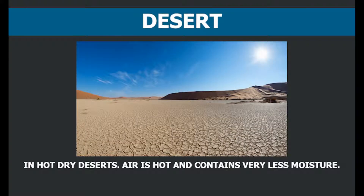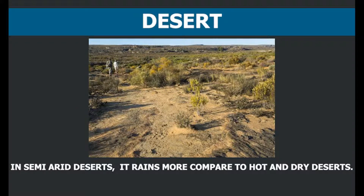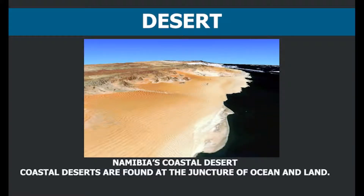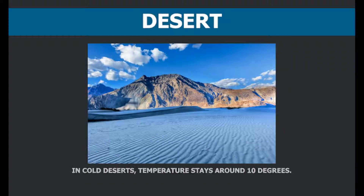For example, in hot dry deserts, air is hot and contains very less moisture. In semi-arid deserts, it rains more compared to hot and dry deserts. Coastal deserts are found at the juncture of ocean and land. In cold deserts, temperature stays around 10 degrees.